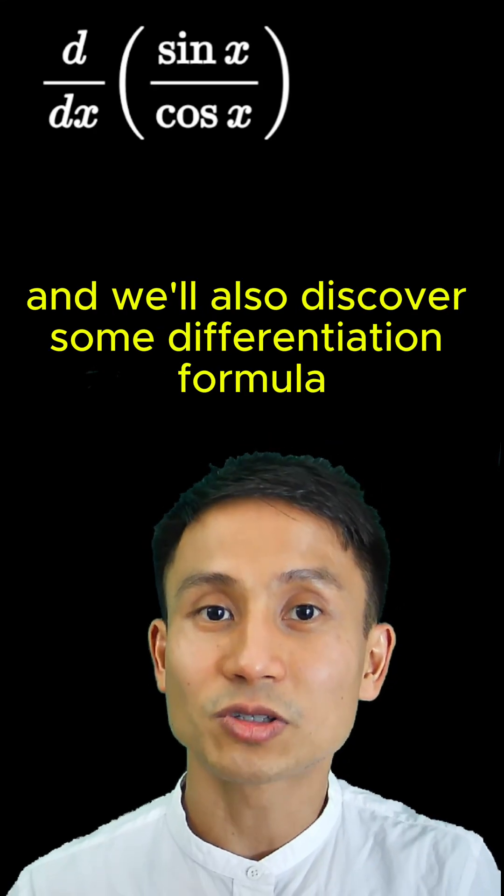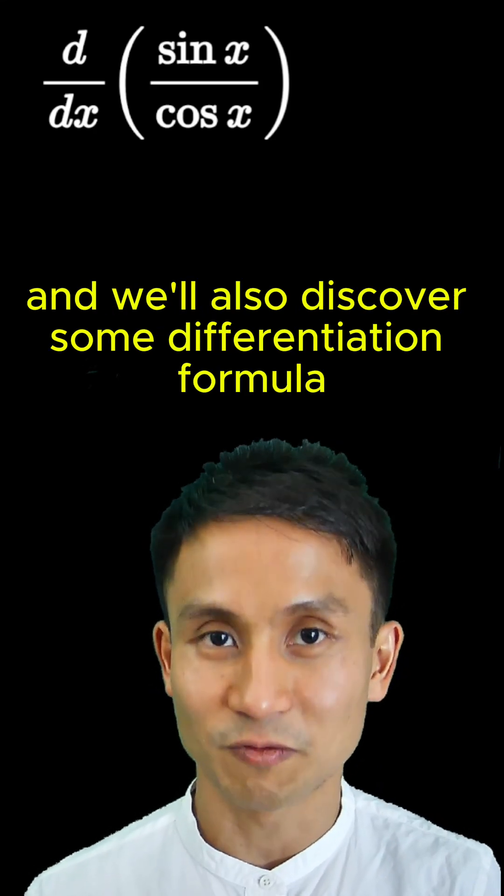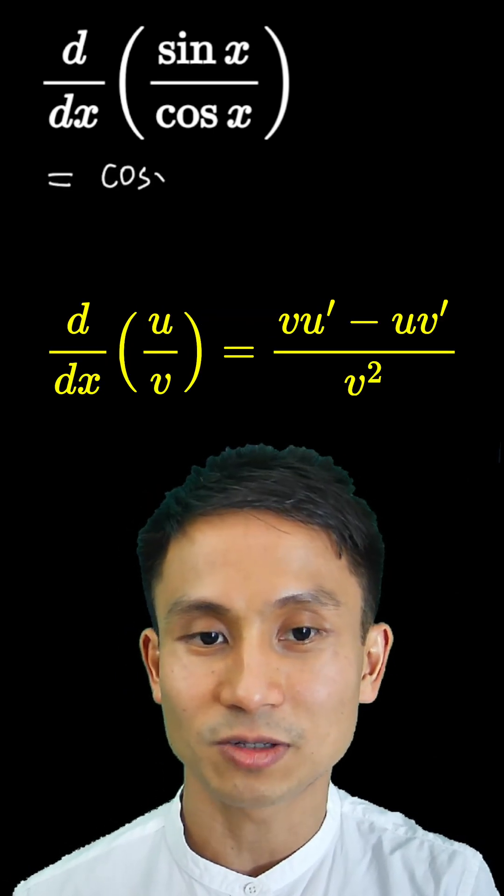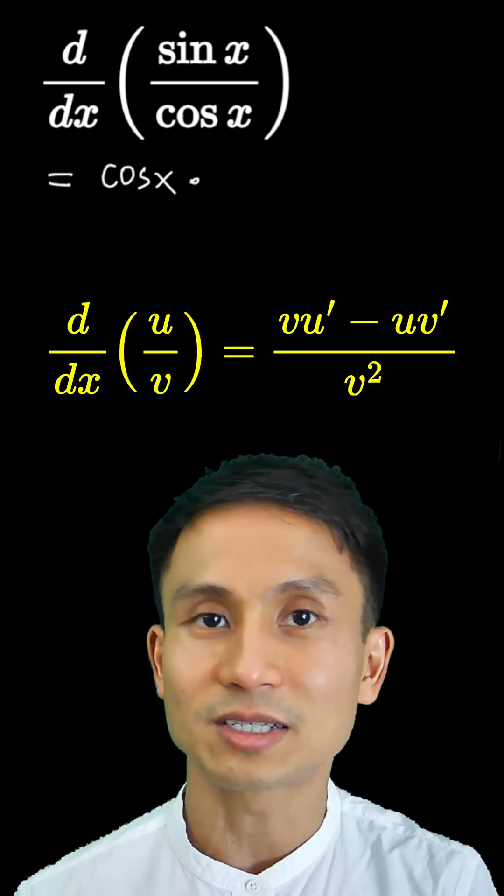Now this one will be interesting and we'll also discover some differentiation formula that we might already know. So using the quotient rule again, the bottom part keeps the same. First we have cos x differentiating sine as the top part.